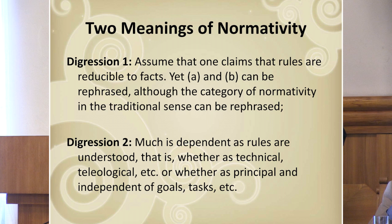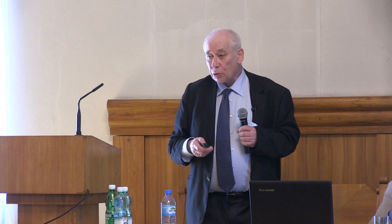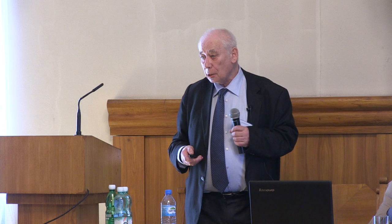Digression two: much depends on how rules are understood — whether as technical, teleological, etc., or whether as principal or sui generis, independent of goals. For example, moral rules are independent of utilities.